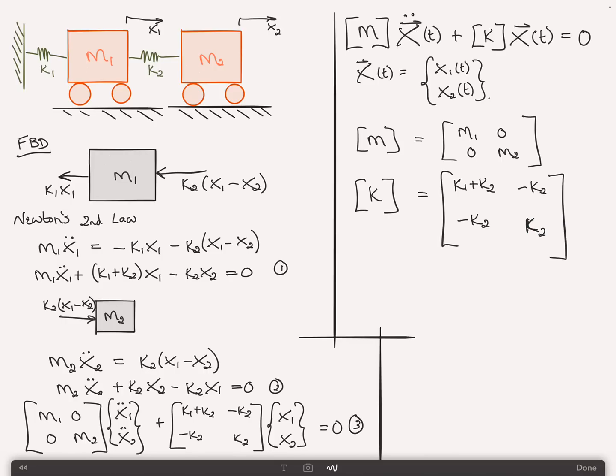And this would be subject to initial conditions something like X of zero is equal to some initially known position vector X0, and similarly the first derivative of the velocity at time zero is equal to some vector V0.